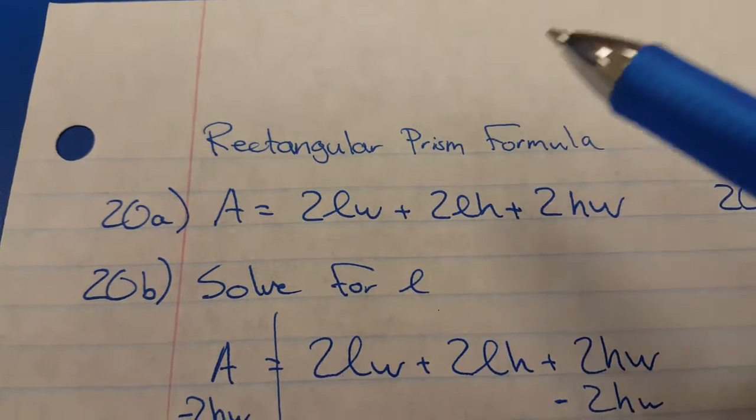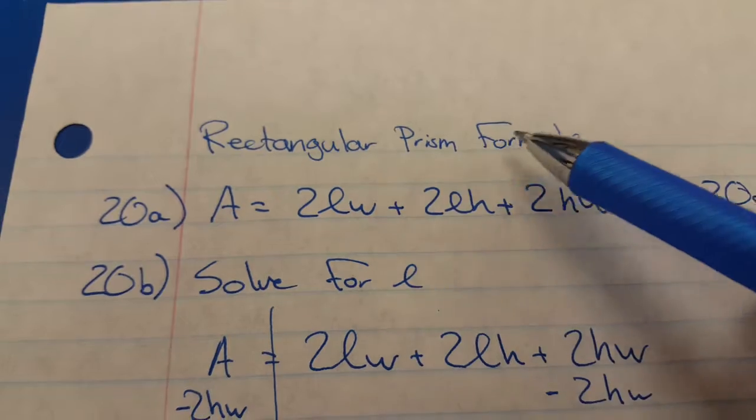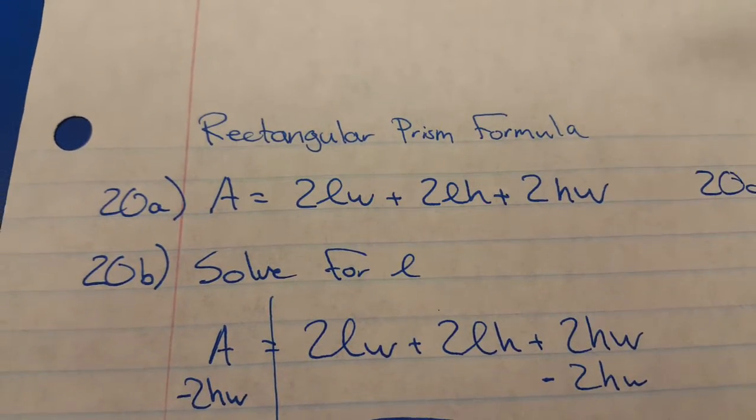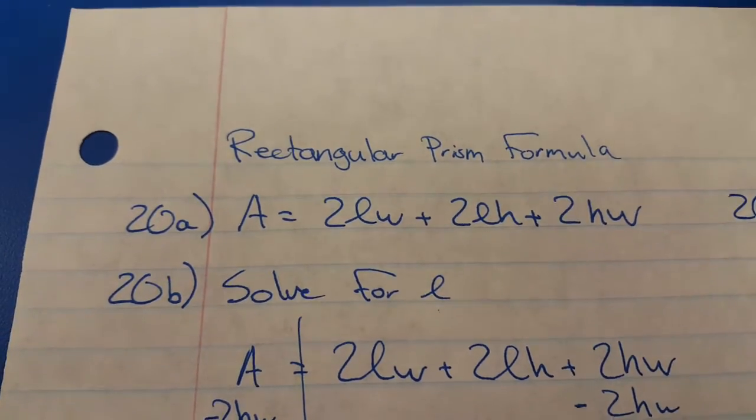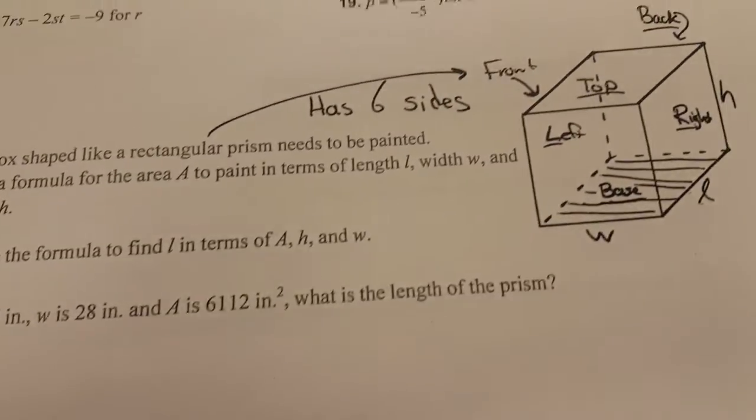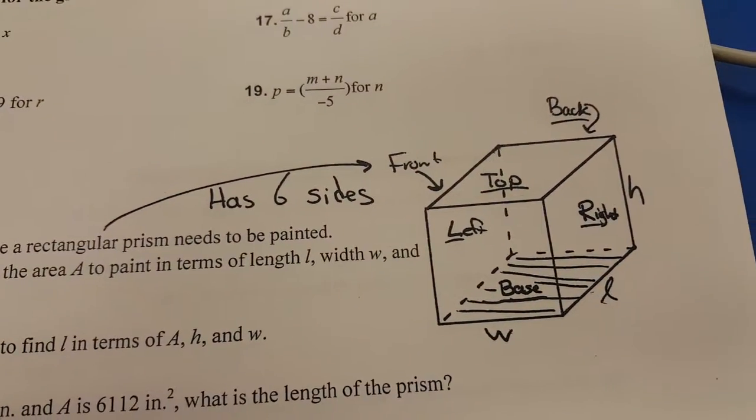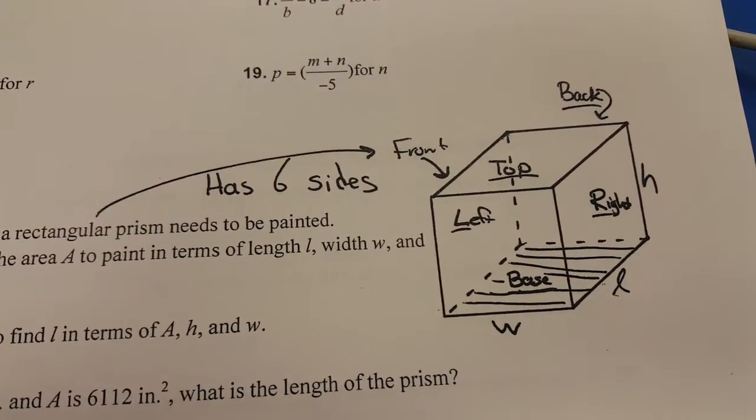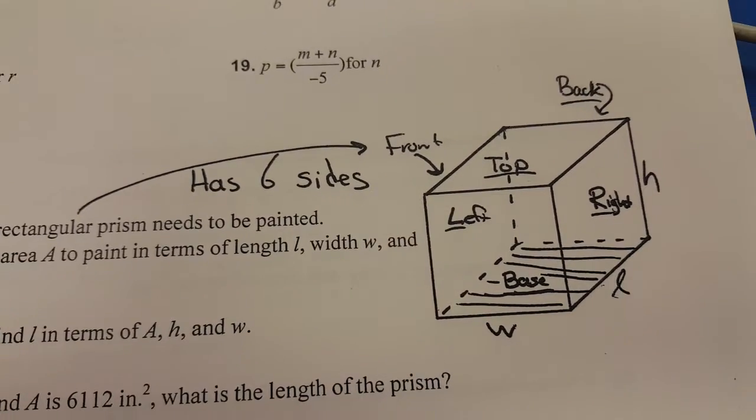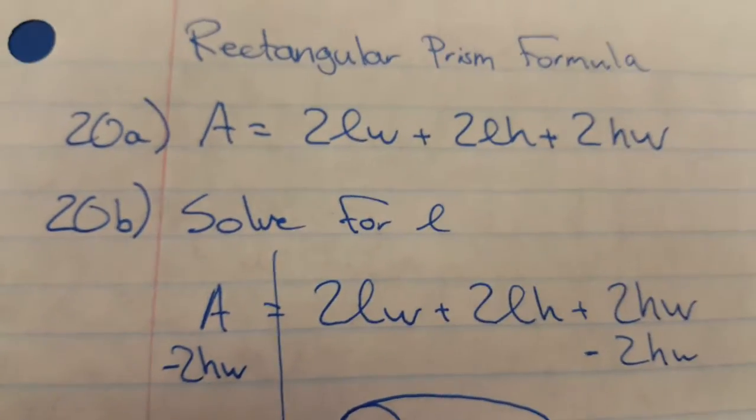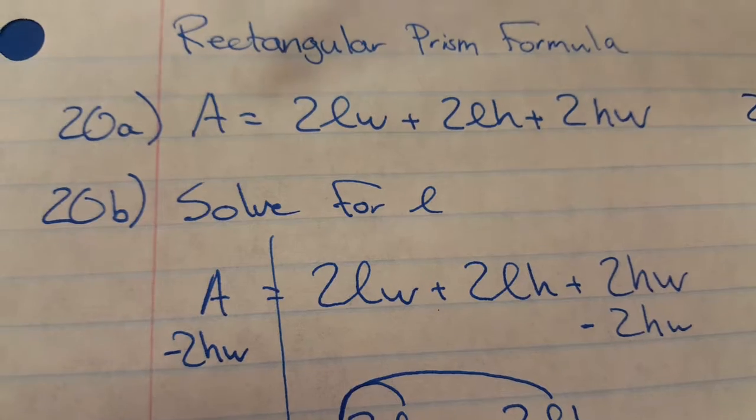Hey, what's up students. I wanted to go over number 20 from the worksheet on rectangular prism formula. So I tried to draw a picture of a rectangular prism as you can see right here on the worksheet to get you to understand there's six sides to a rectangular prism, also known as a box. Here's the formula: the area would equal 2LW + 2LH + 2HW.